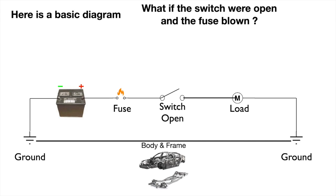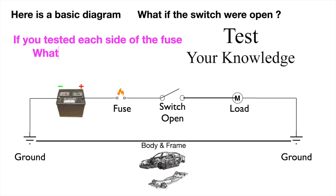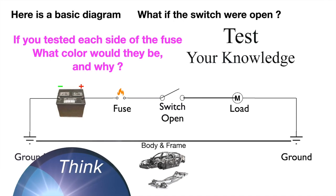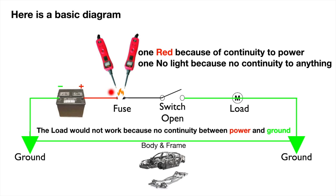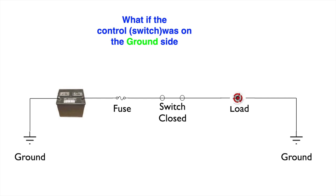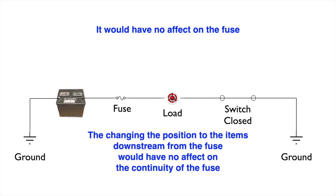What if the switch were open and the fuse were blown? If you tested each side of the fuse, what color would they be and why? One would be red because of continuity to the power source, and one would have no light at all because there is no continuity to anything. The load would not work because there is no continuity between power and ground. Now what if the control or switch was on the ground side of the diagram? It would have no effect on the fuse because changing the position of items downstream from the fuse has no effect on the continuity of the fuse.